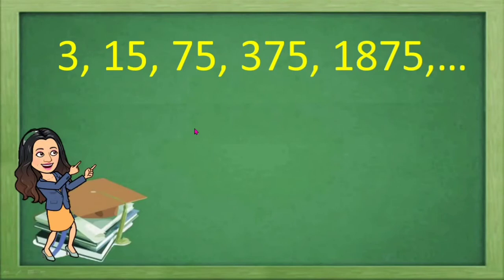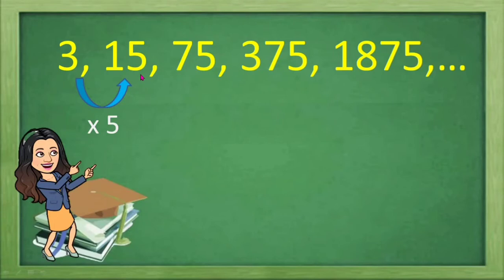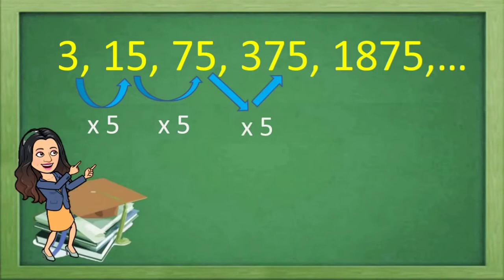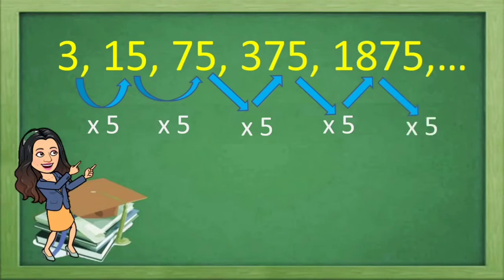Another example. The first term is 3, the second term is 15, the third is 75, the fourth is 375, and the fifth is 1875, and so on. What do we do to the first term, 3, to get the second term, 15? We multiply 3 by 5 to get 15. And what do we do to the second term, 15, to get the third term, 75? We multiply 15 by 5 to get 75. If we multiply 75 by 5, that is equal to 375, the fourth term. If we multiply 375 by 5, that is equal to 1875, the fifth term. And therefore, the rule is multiplying by 5.